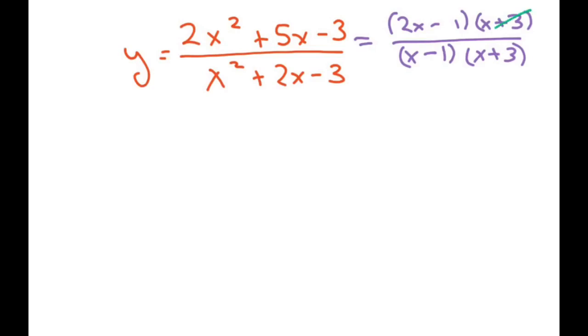Now we do have a removable discontinuity at x equals negative 3, and it's a point, so we're going to write negative 3. Then to get our y value, you plug in negative 3. So this is going to equal negative 6 minus 1 is negative 7, over negative 3, that's going to be 7 over 4.